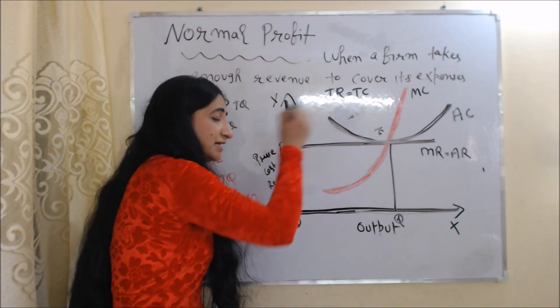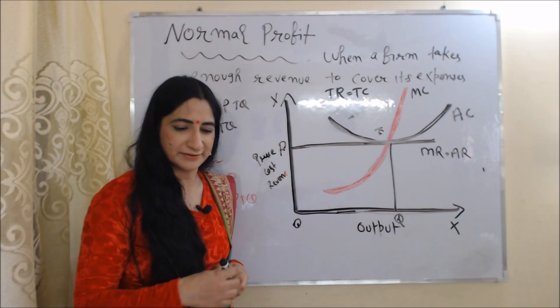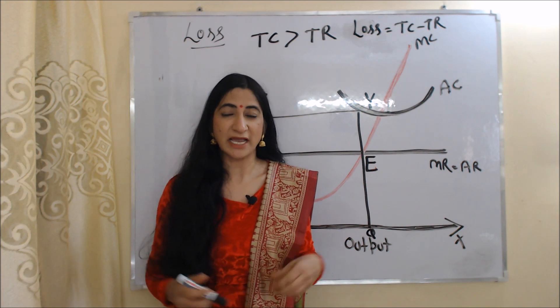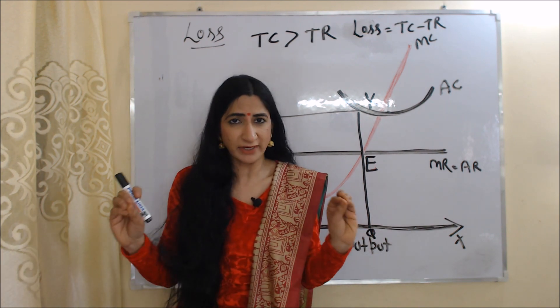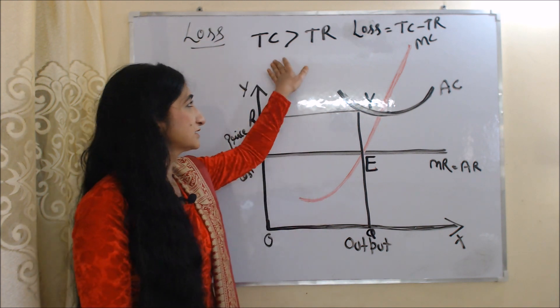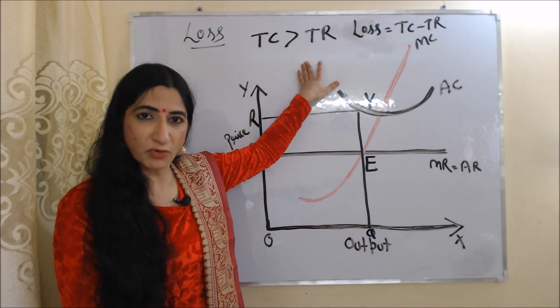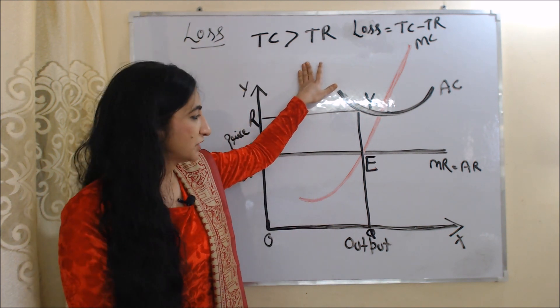Now we are going to talk about loss. In the case of loss, cost is more than income. So we can say that in the case of loss, total cost is more than total revenue.